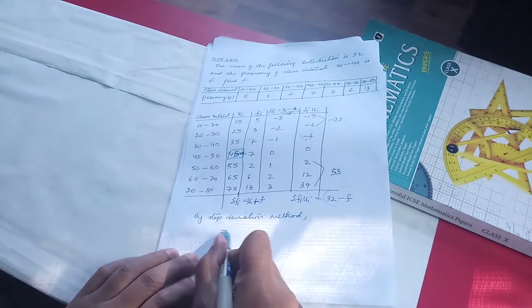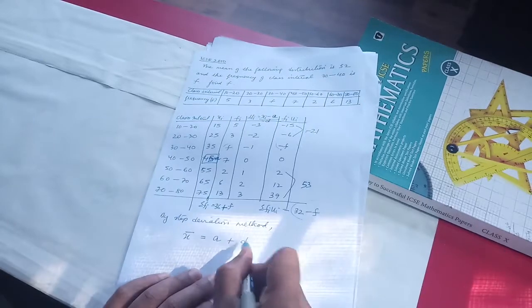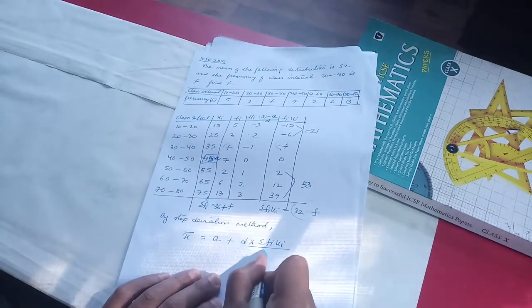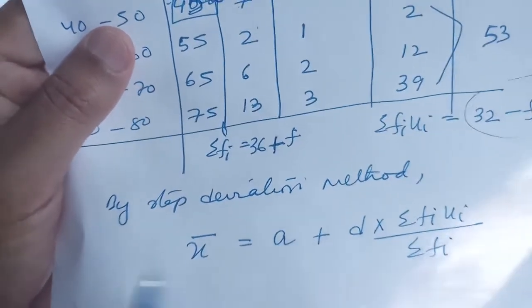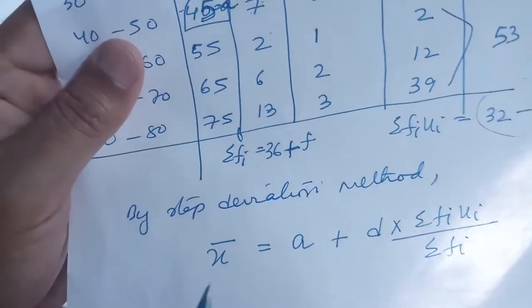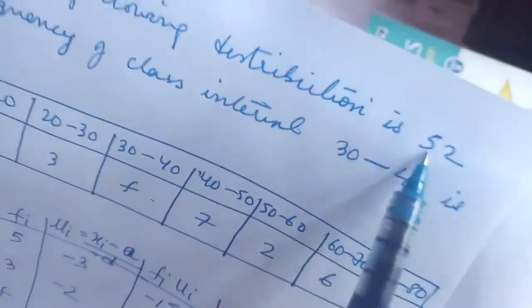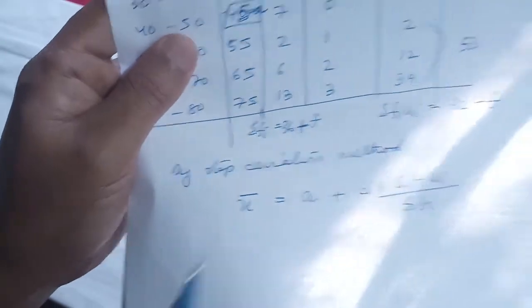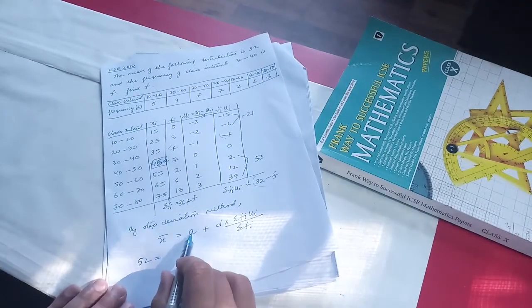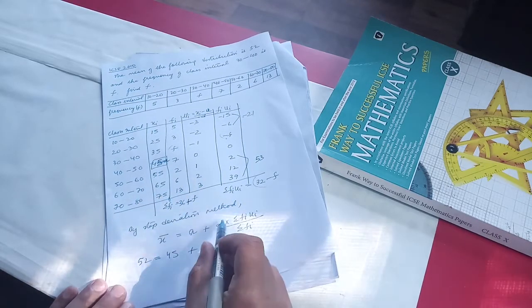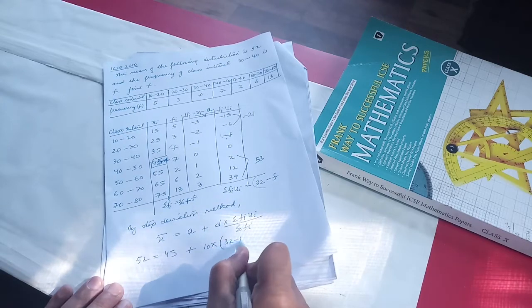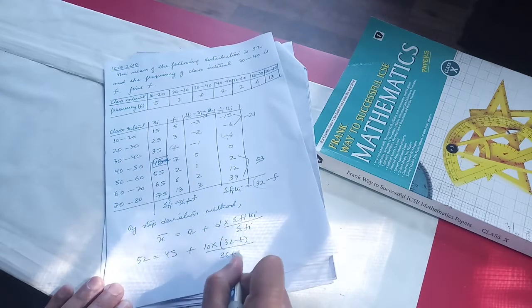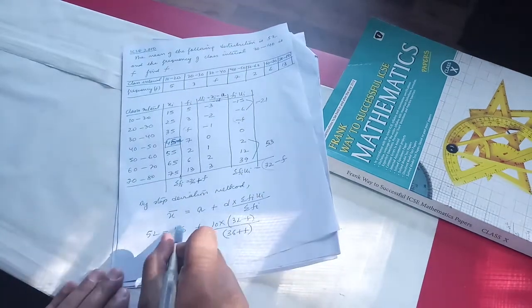By the step deviation method, the mean = a + d × (Σfi·ui / Σfi). The mean is given as 52, a = 45, d = 10, Σfi·ui = (32 − F), and Σfi = (36 + F). Substituting: 52 = 45 + 10 × (32 − F) / (36 + F).